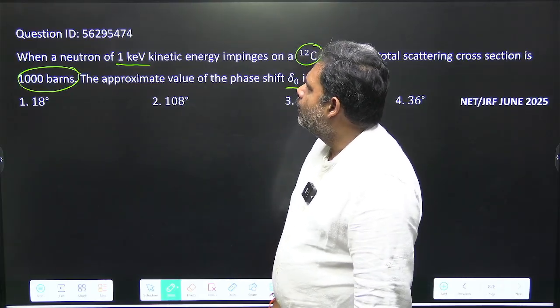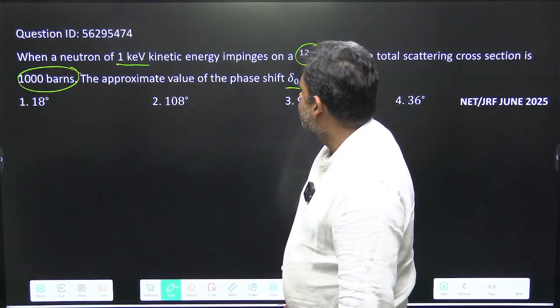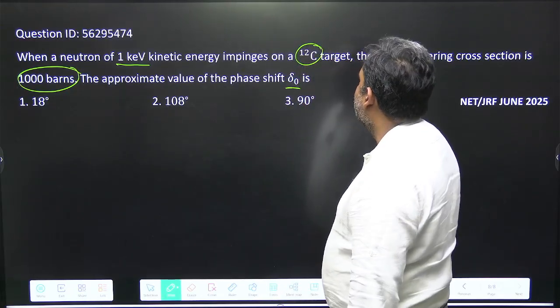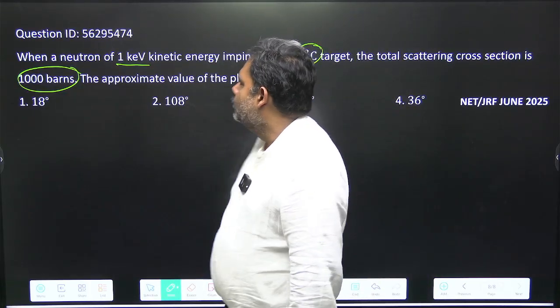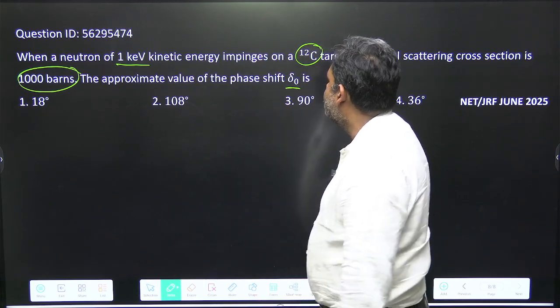It is given: when a neutron of 1 kiloelectron volt kinetic energy impinges on a carbon-12 target, the total scattering cross section is 1000 barns. The approximate value of phase shift δ₀ is what?